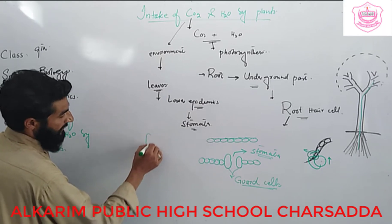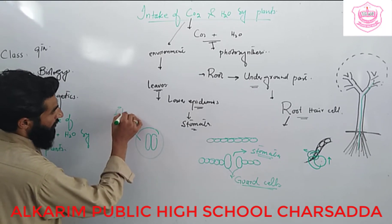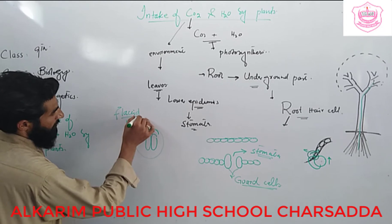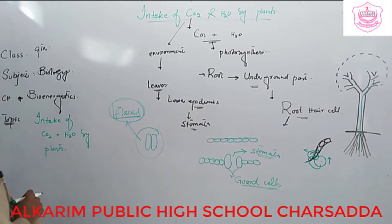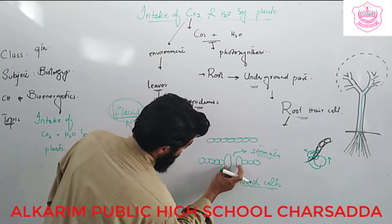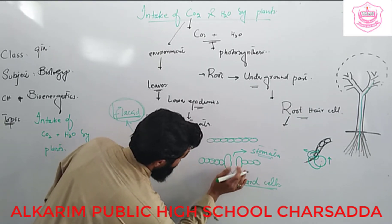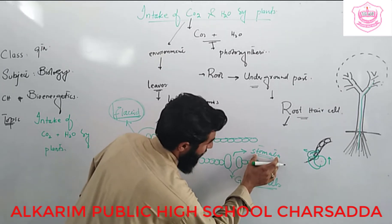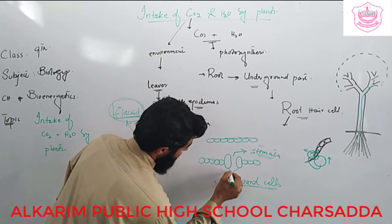In the absence of water, the guard cells are deflated and the stomata is closed. If the plant has a deficiency of water, it cannot open the stomata because water is lost in the process of transpiration, which causes wilting. That is why in harsh conditions, the plant closes its stomata to prevent water loss. When the plant absorbs water, each cell absorbs water and the guard cells absorb water, producing a pore known as the stomata.